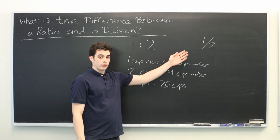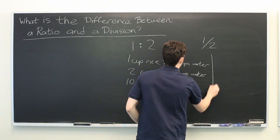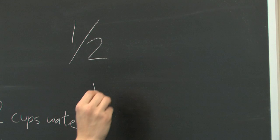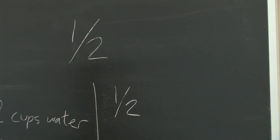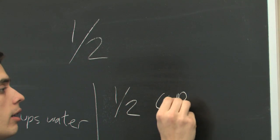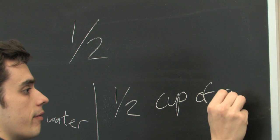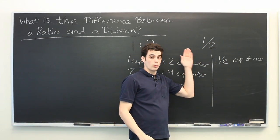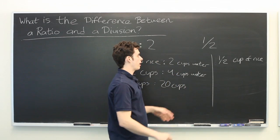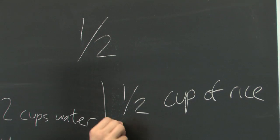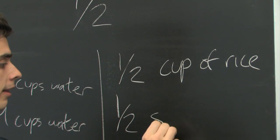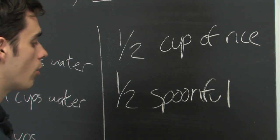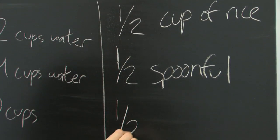One-half, on the other hand, represents one single quantity — for example, one-half cup of rice. That is a definite quantity that you will be using; there is no choice in the matter. It might mean half a spoonful of some other quantity, or where you ate one-half of an apple.